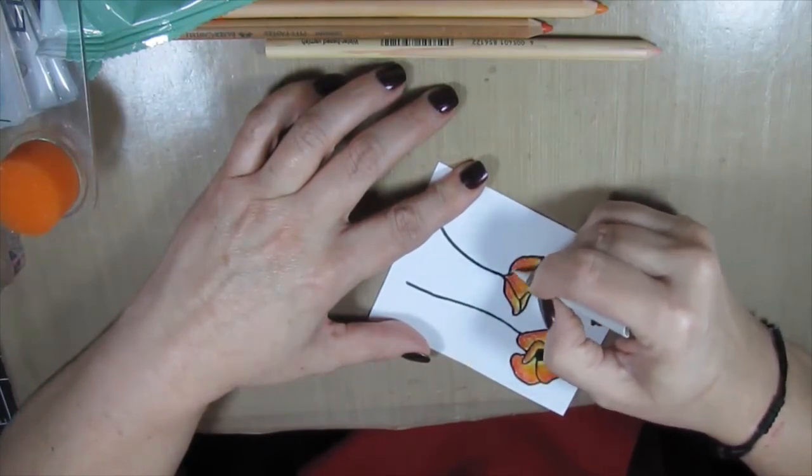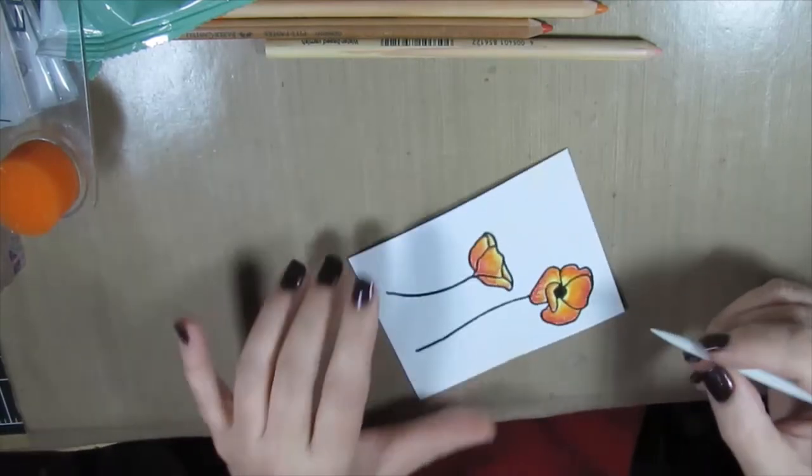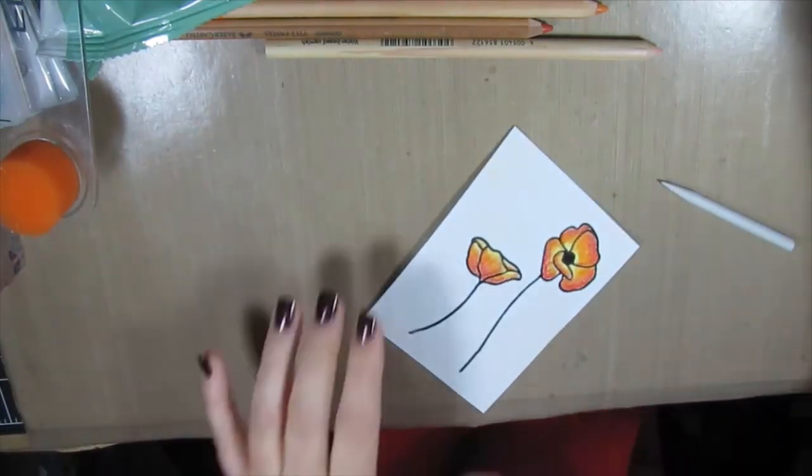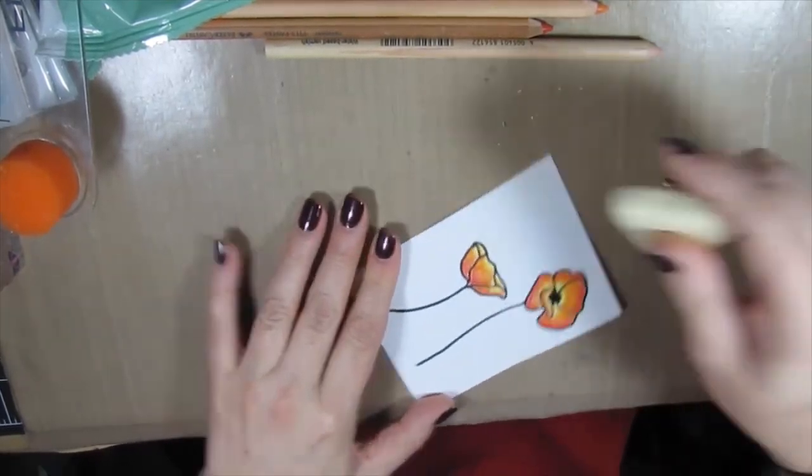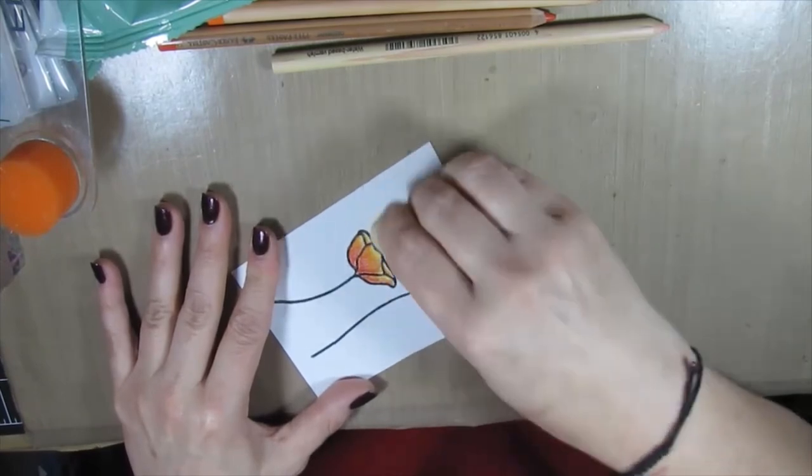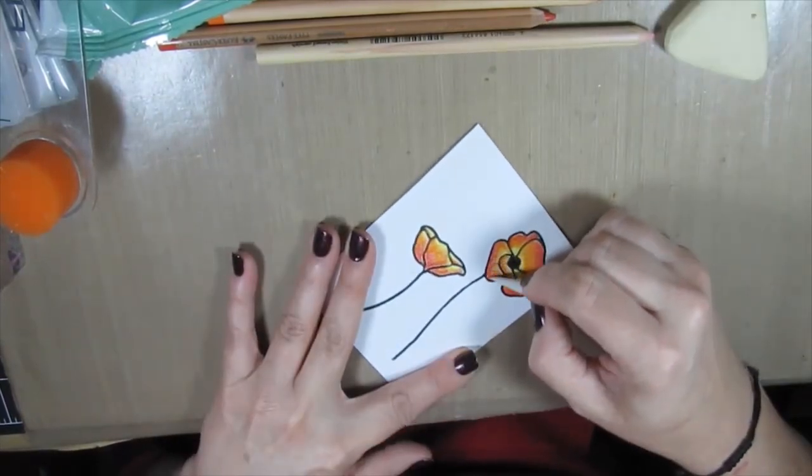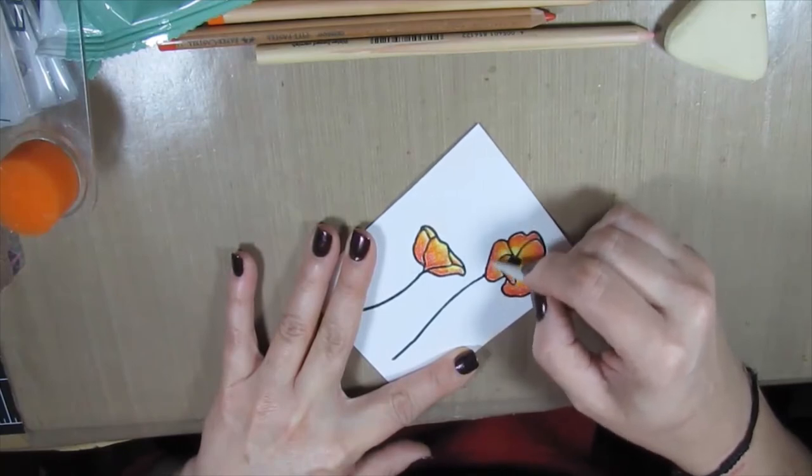Now this is just a blending stump, I think that's what they're called, and I'm just using that to blend the colors a little bit more precisely in some of the corner areas where the color didn't quite get in there. It worked really well to get into some of the areas that didn't quite get all the color that I wanted.